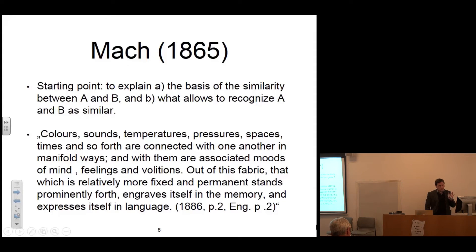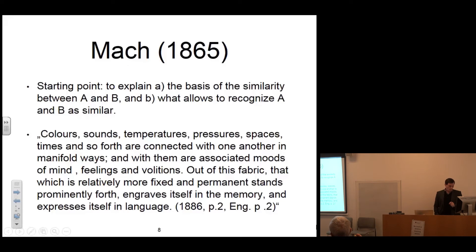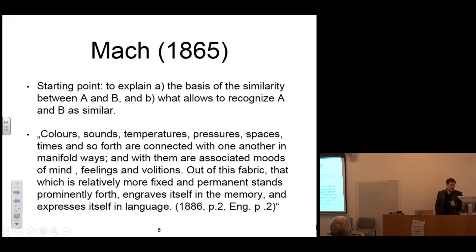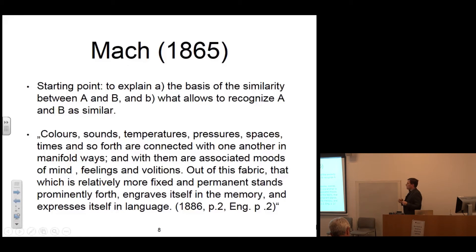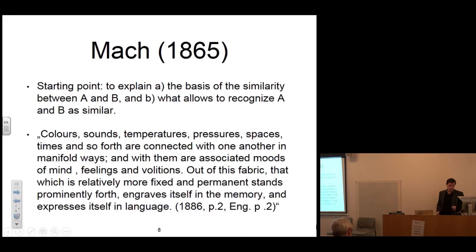Twenty years later, Mach wrote the very influential book on the Analysis of Sensations. This quote gives us more information on what kind of connections are involved: 'Colors, sounds, temperatures, pressures, spaces, times, and so forth are connected with one another in manifold ways. And with them are associated moods of mind, feelings, and volitions.' So the content of the form is addressed in many different kinds of connections, and there is an association with emotions, presentations, moods, feelings — the mental life, basically. Out of this fabric, which is relatively more fixed and permanent, stands prominently forth, engraves itself in the memory, and expresses itself in language.